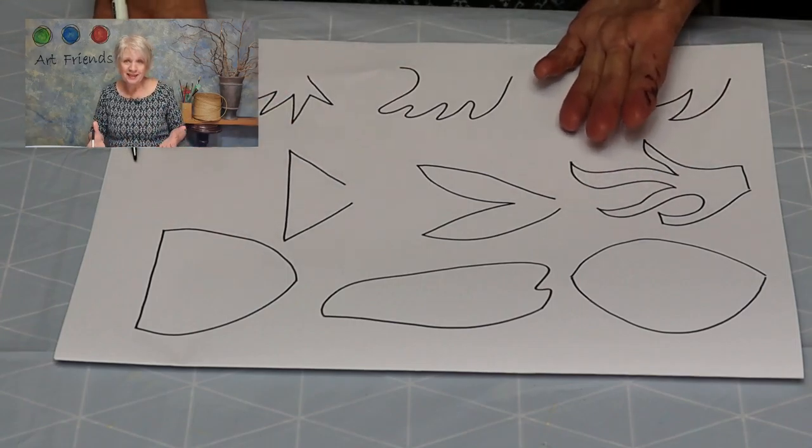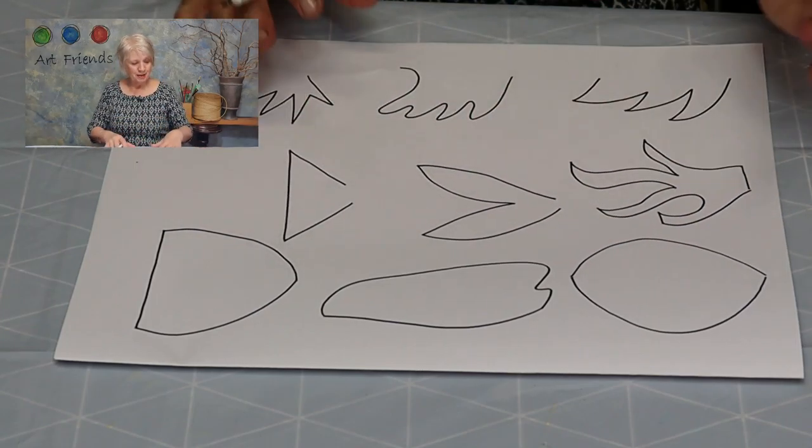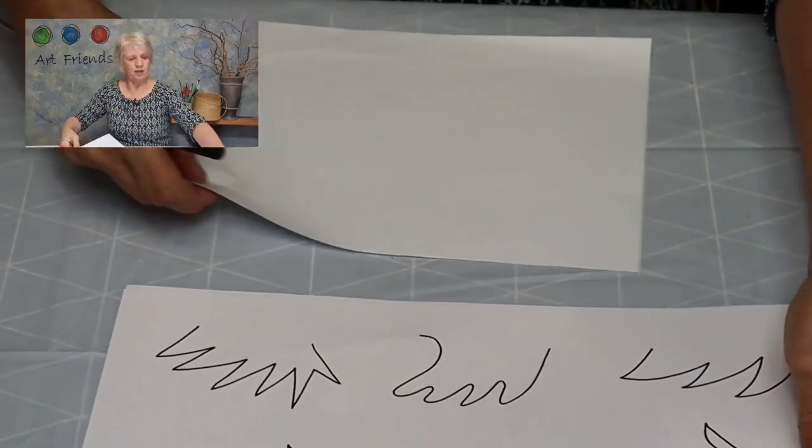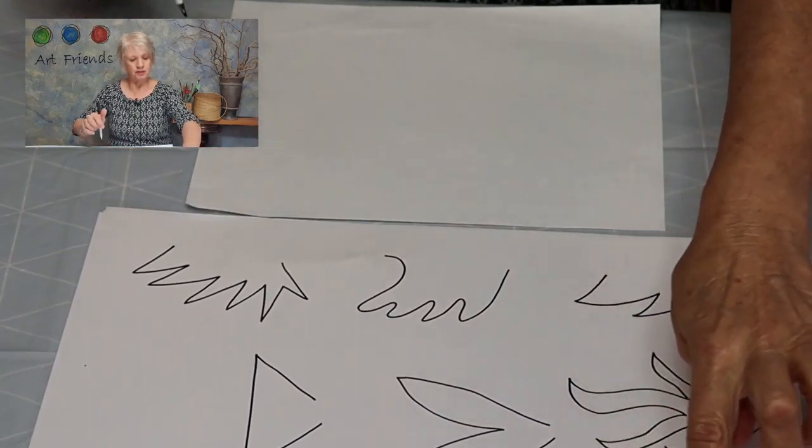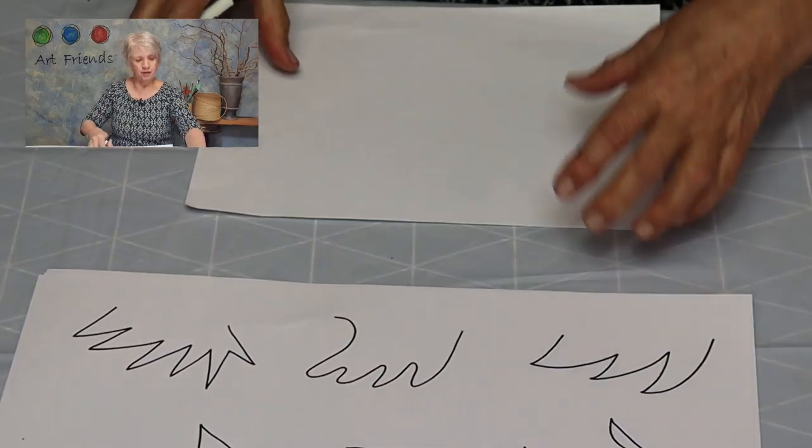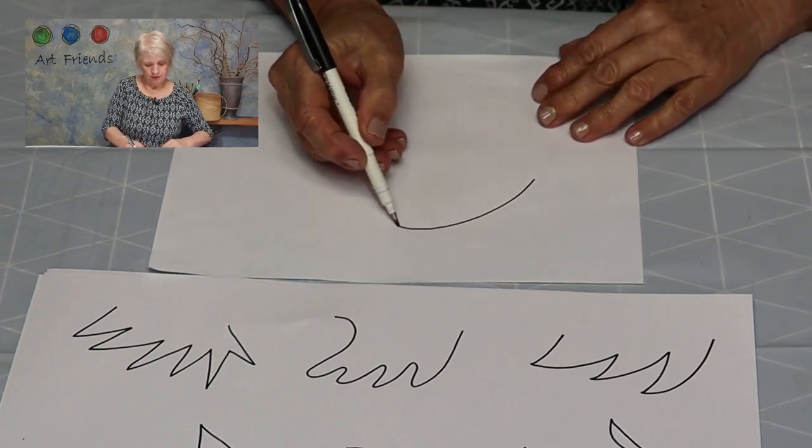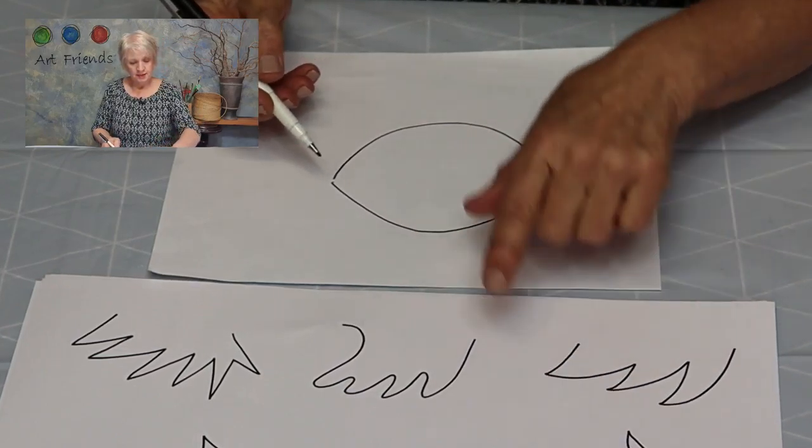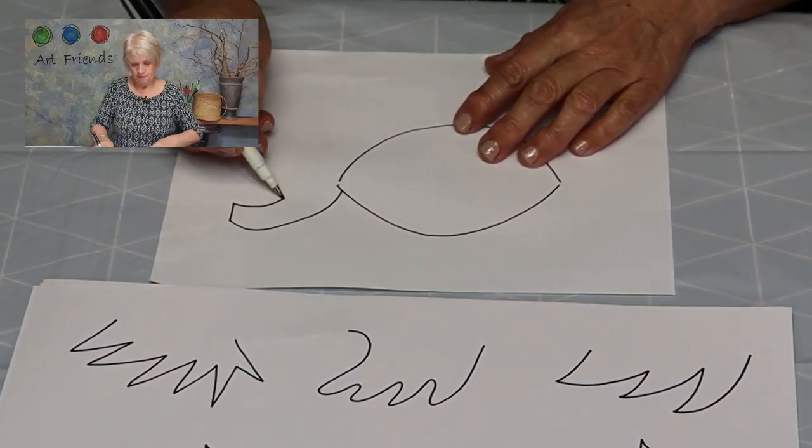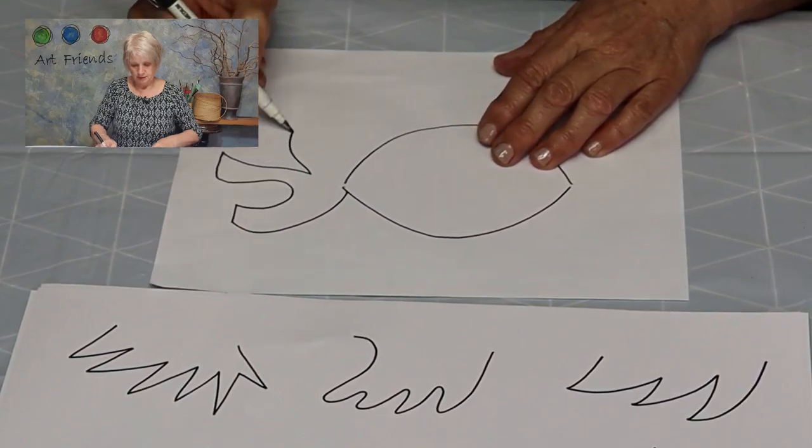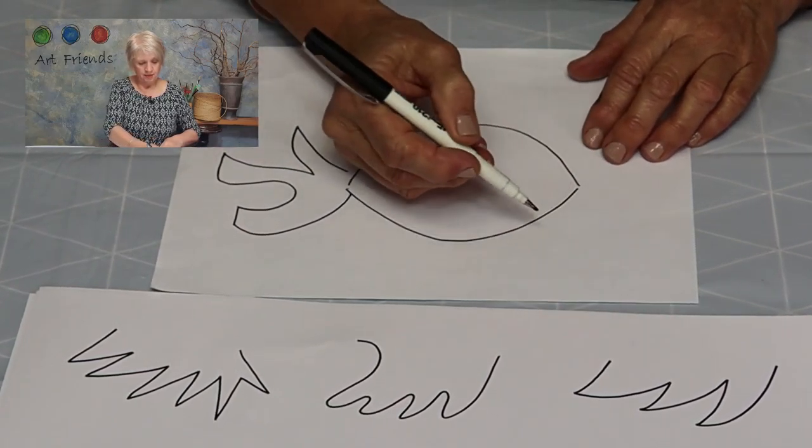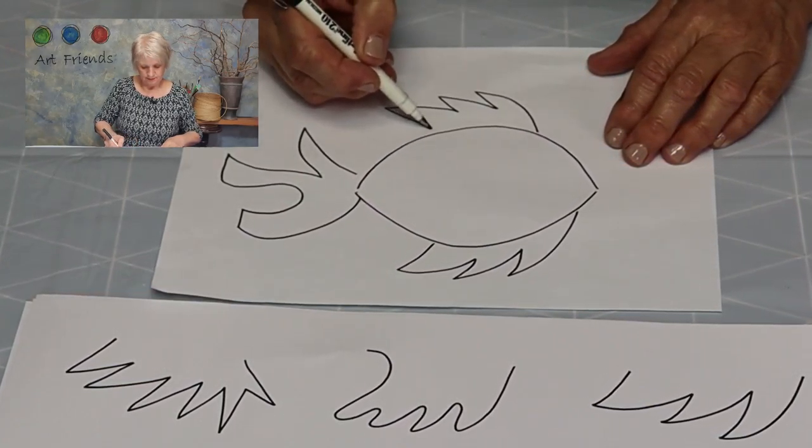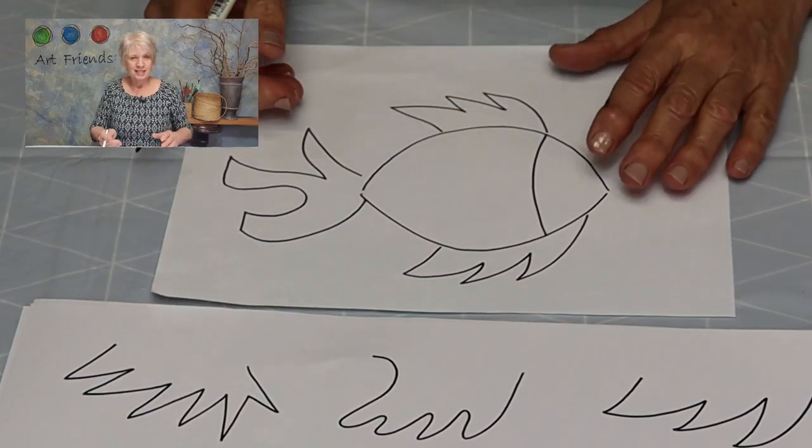Now I'm going to put these together and create a fish using these parts. So I'll look at the other piece of paper. I think I'm going to use this one here, the big round one. And I think I like that tropical fish one. And these fins. And that's my fish design.